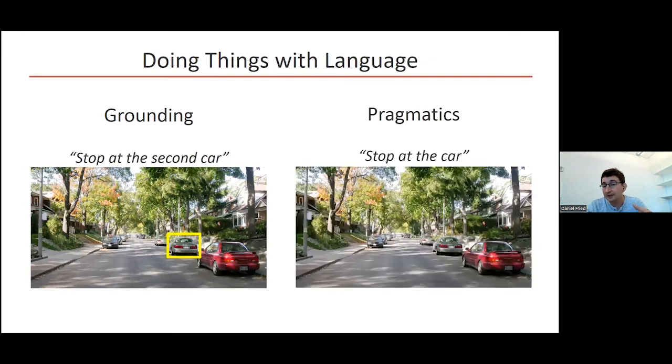But if someone says stop at the car, there's a bunch of cars here. How do you figure out which one they had in mind? Most people would choose this car here, and one way you can derive this is by reasoning about alternatives. The person who gave you this instruction had some car in mind, and since they chose stop at the car rather than something more specific like stop at the second car, they probably meant this one here.